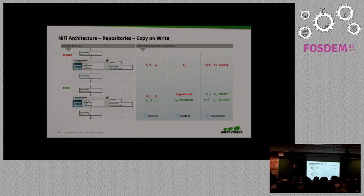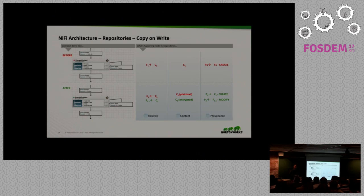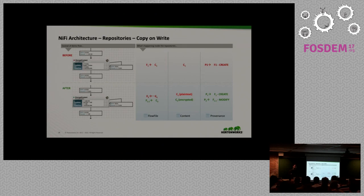On two-phase commit, write-ahead log, and cluster scaling: it scales extremely well — it is built to be a clustered system with an entire cluster coordinator. It uses embedded ZooKeeper if another instance isn't available. Resource management and allocation is still something we're continuing to work on, integrating with Mesos, YARN, or other resource managers. NiFi will encapsulate the resource management; it has cluster coordinator, heartbeat, and all that. Two-phase commit is for follow-on systems to acknowledge receipt; the write-ahead log is copy-on-write so you don't lose the record of what the data was.